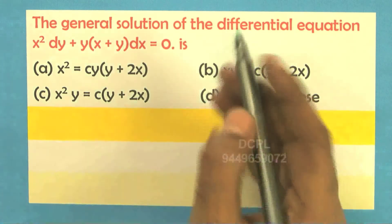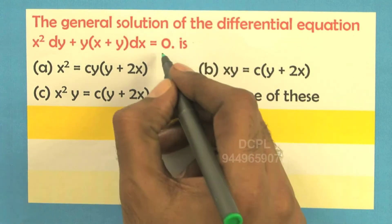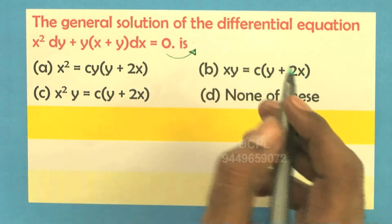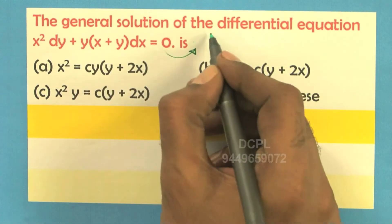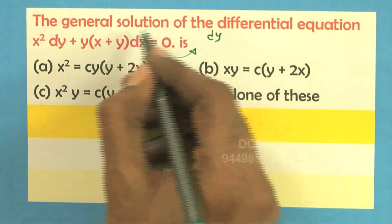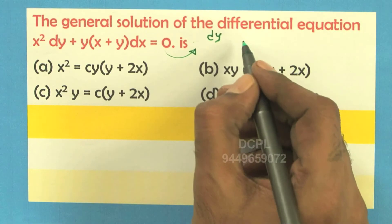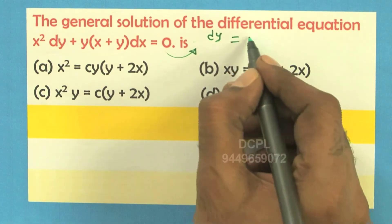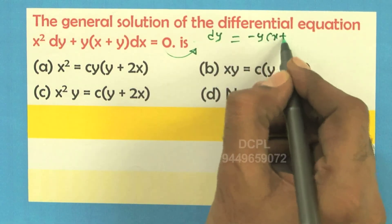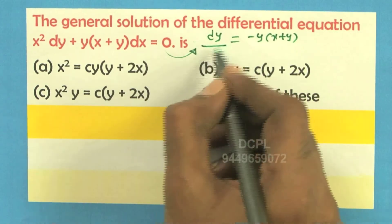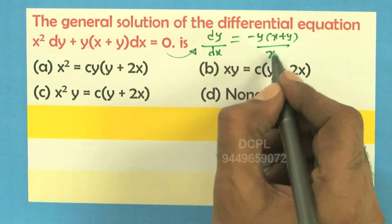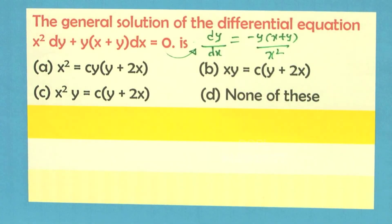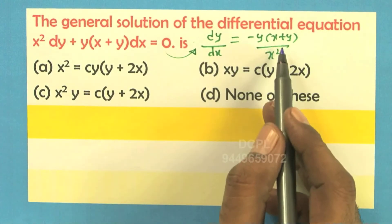You can rewrite this as: x squared dy, shift the other term to the right hand side, and you will get dy by dx is equal to minus y into x plus y divided by x squared. This is definitely a homogeneous equation.